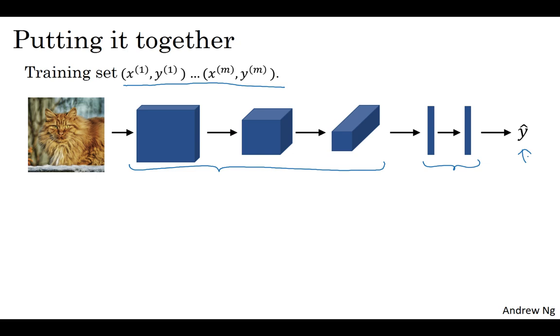The conf layers and the fully connected layers will have various parameters w as well as biases b. And so any setting of the parameters therefore lets you define a cost function